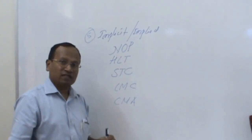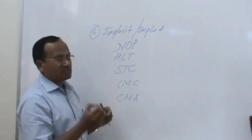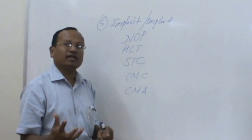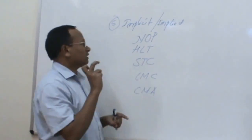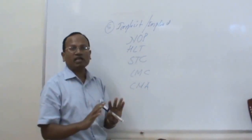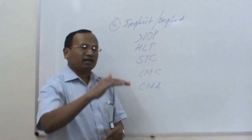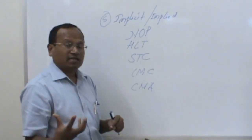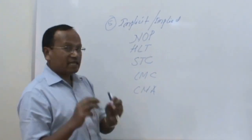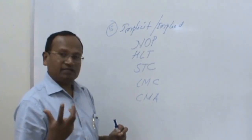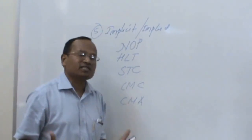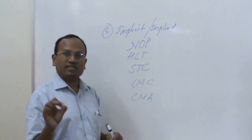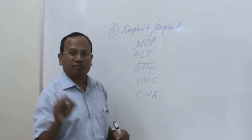So this covers all the addressing modes. To conclude: addressing mode is the different way in which operands are specified. There are five types: direct addressing mode, indirect addressing mode, register addressing mode, immediate addressing mode, and implicit addressing mode. The way we perform the operation over the operand determines whether it is direct or indirect. If the operands are registers, it is register addressing mode. If the operand is immediate data, it is immediate addressing mode. And if no operand is specified, it is implicit addressing mode. I hope this gives you an overview of the concept of addressing modes. Thank you.